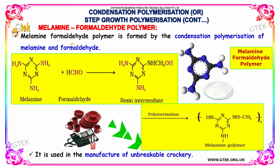Melamine formaldehyde polymer is formed by the condensation polymerization of melamine and formaldehyde. Melamine and formaldehyde react to produce a resin intermediate, which on further polymerization results in the product of melamine polymer of N units.